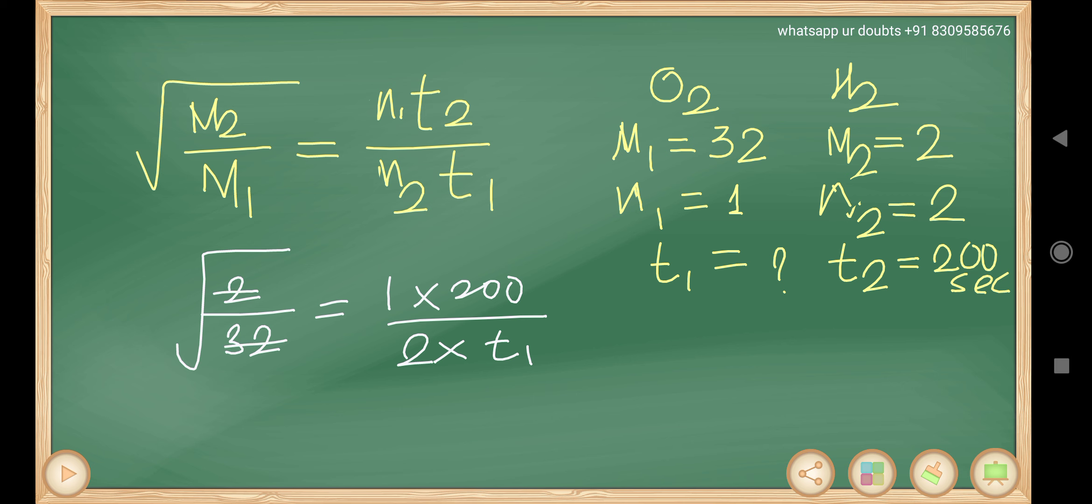This is 16. Root 16 is 4. So 1 by 4 equals 1 times 100 by T1, or T1 equals 400 seconds.